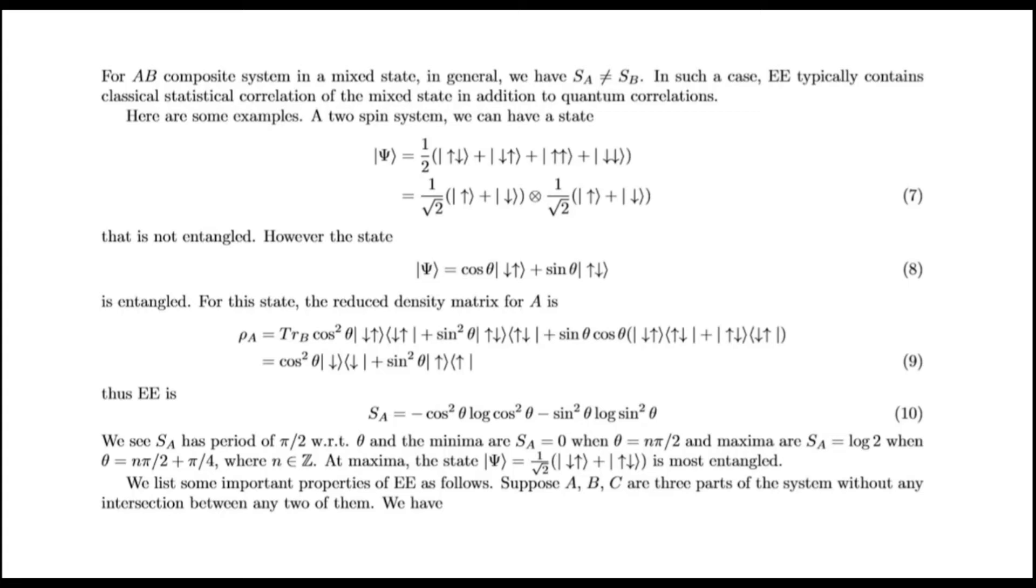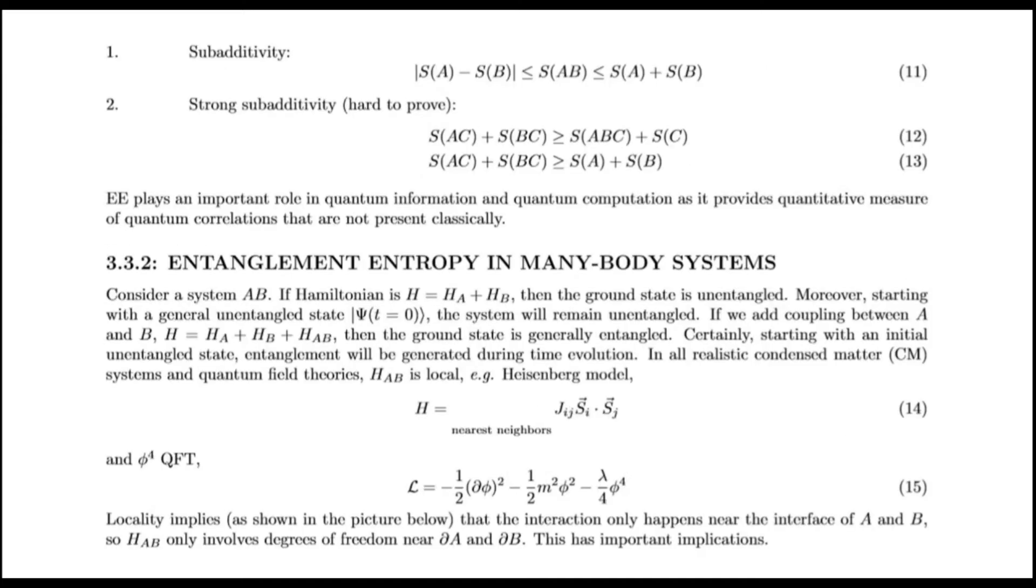List of important properties of entanglement entropy as follows. Suppose A, B, C are three parts of the system without any intersection between any two of them. We have subadditivity and strong subadditivity. Entanglement entropy plays an important role in quantum information and quantum computation.